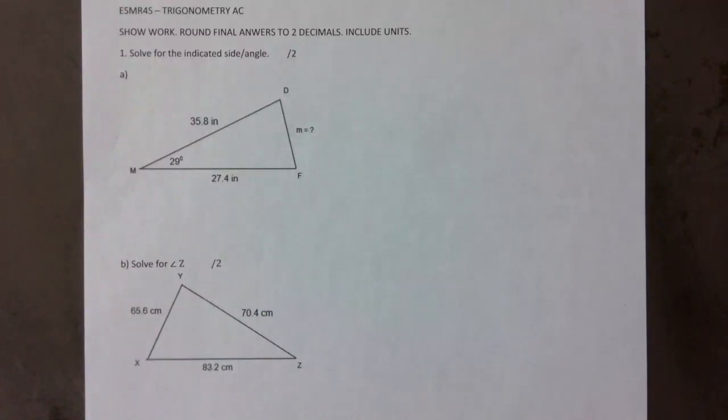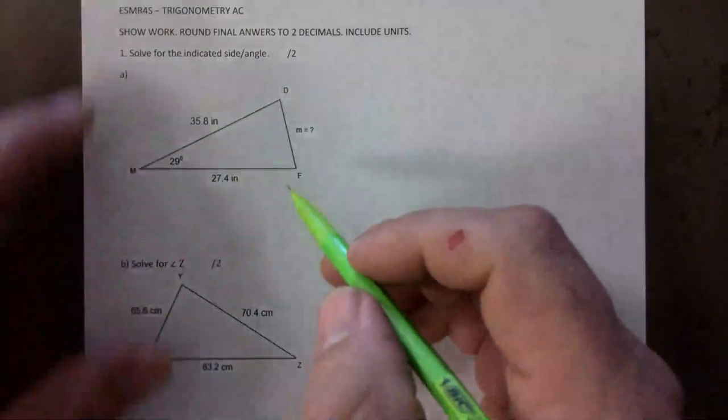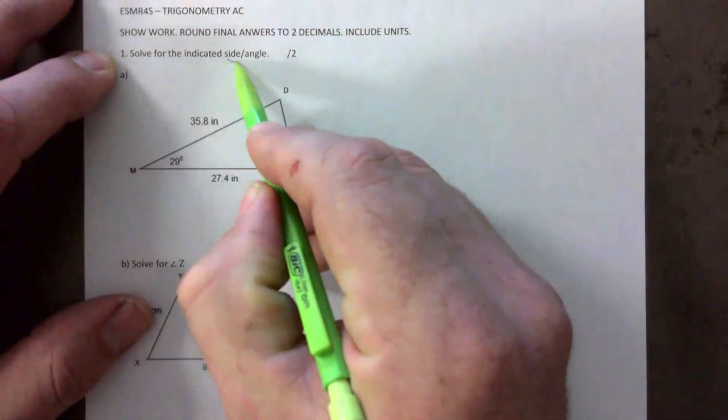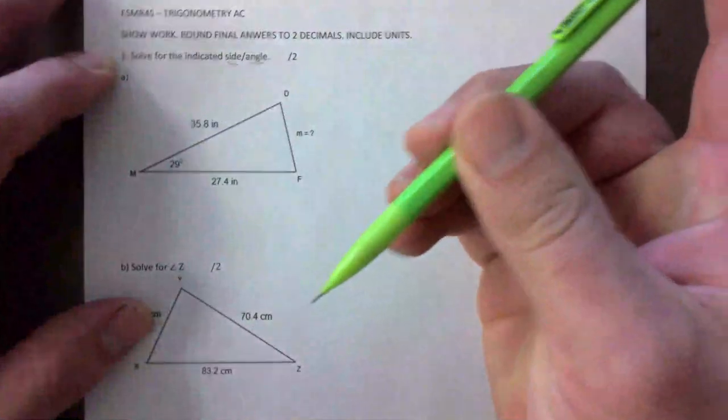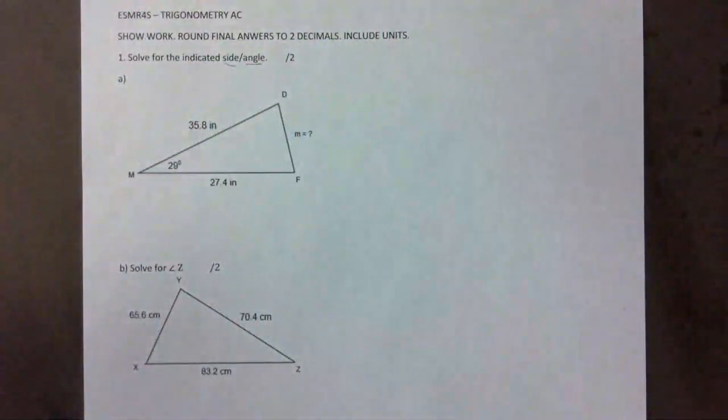Put the date on there if you ever feel like going back in time and looking up the correction. Solve for any indicated side or angle. Always remember final answer rounded to two decimals regardless of what the question says.